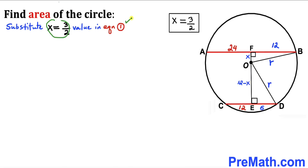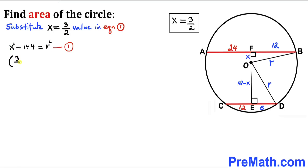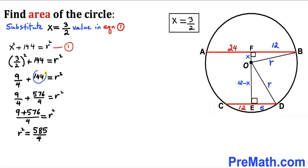Now let's substitute x equals 3/2 into equation one: (3/2) squared plus 144 equals r squared. That gives 9/4 plus 144 equals r squared. Converting 144 to 576/4, we get the same denominator, and simplifying everything, our r squared turns out to be 585 divided by 4.